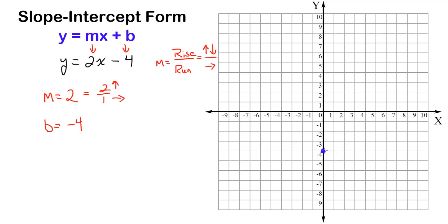So the fraction 2 over 1 tells me to move up 2 steps and to the right 1 step. Starting at our y-intercept, I move up 2 — 1, 2 — and to the right 1 step, and that is the location of another point on this line. All you really need to create a line are 2 points and a straight edge, but I always like to keep moving the way the slope tells me, because the more points I have, the easier it is to line up my straight edge and make sure I get a good line.